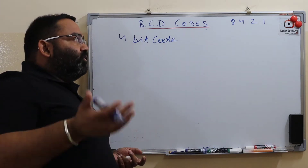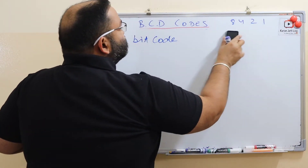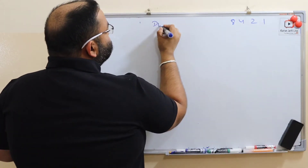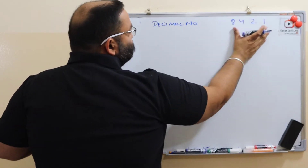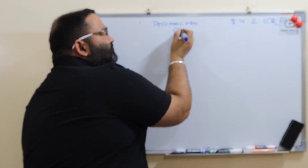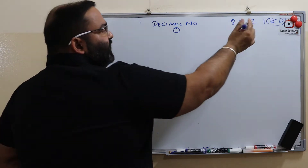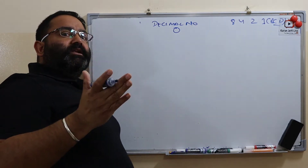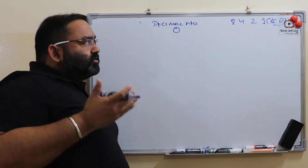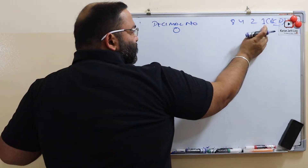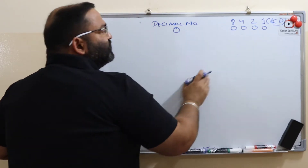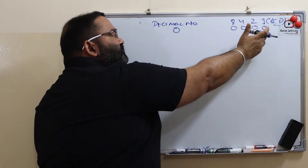How does it work? Suppose we have a decimal number. Here is the 8421 or BCD code. Suppose our decimal number is 0. In the 8421 system, we have to see which combination generates 0. To create 0, we do not need 1, 2, 4, or 8. So 0 is represented in BCD code as 0 0 0 0.